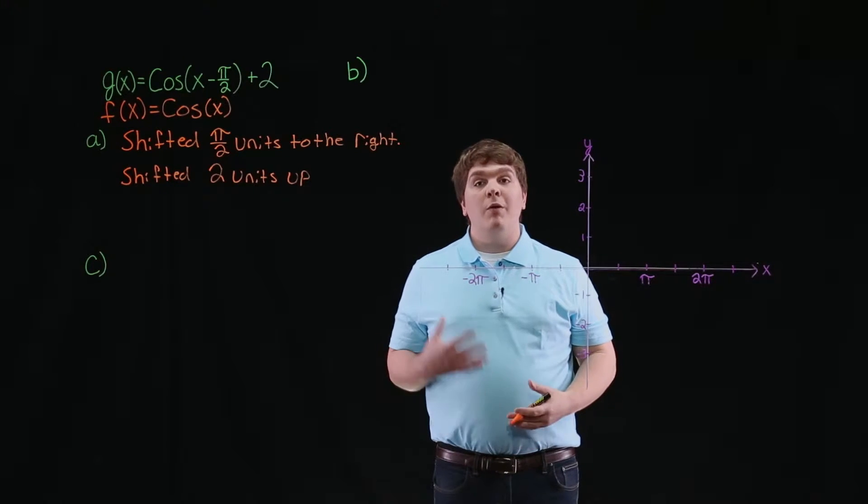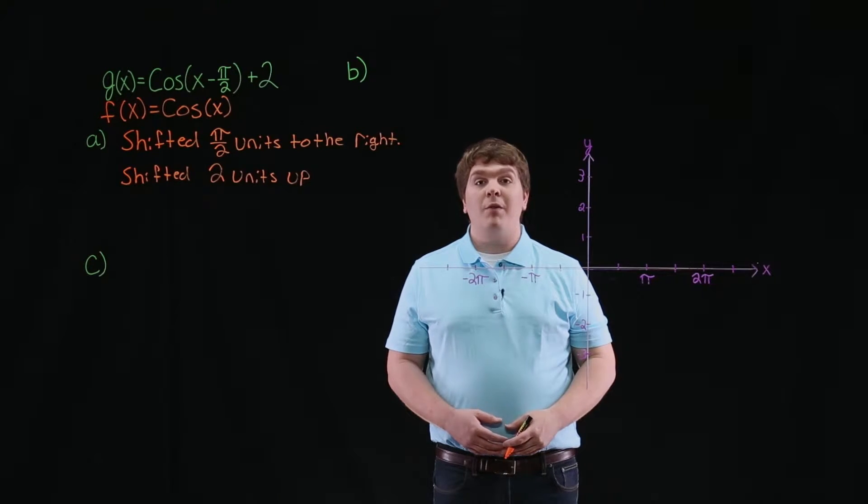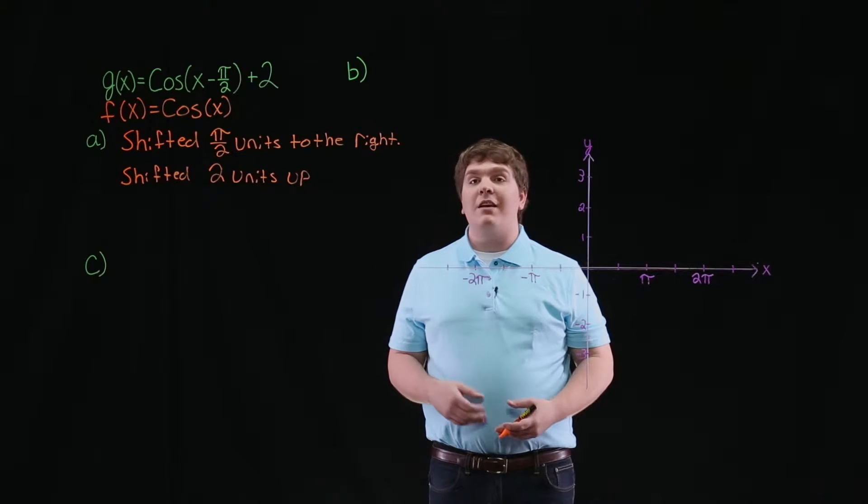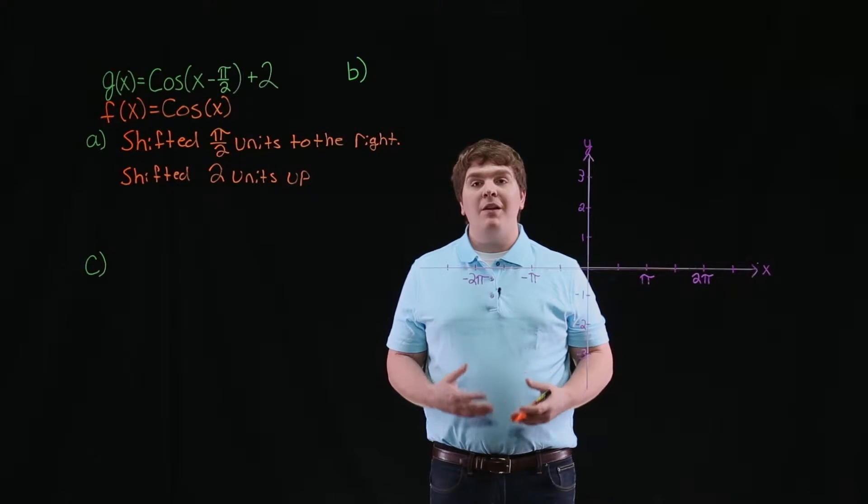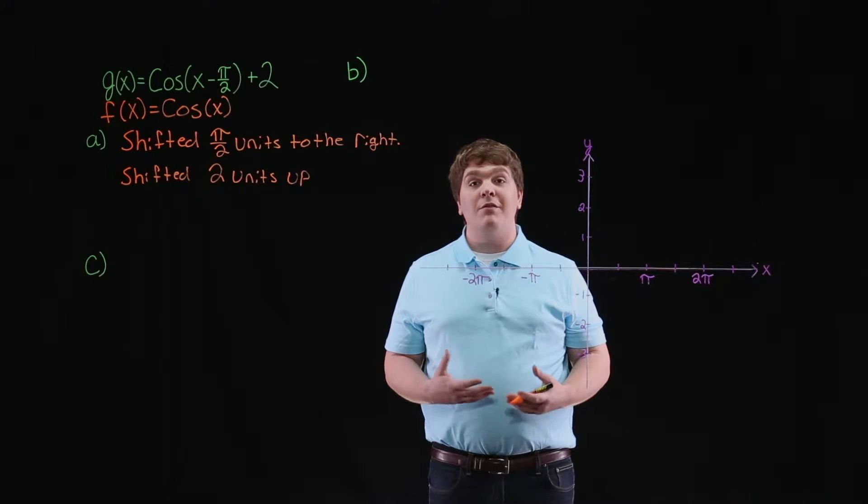For part B of this problem, we're asked to sketch the graph of g of x. Now note that f of x and g of x are related, and we can manipulate the key points for f of x to obtain the key points for g of x.